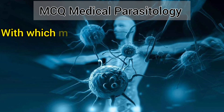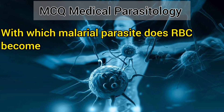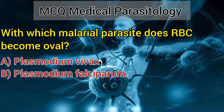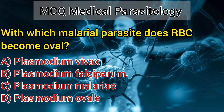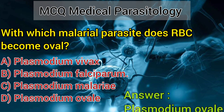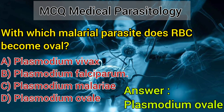Number 9. With which malarial parasite does RBC become oval? A. Plasmodium vivax. B. Plasmodium falciparum. C. Plasmodium malariae. D. Plasmodium ovale. Answer: Plasmodium ovale.